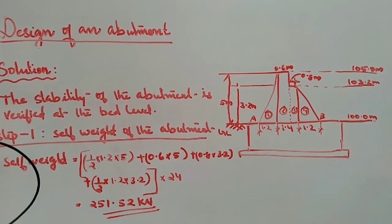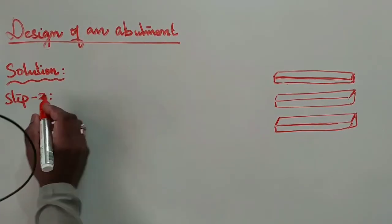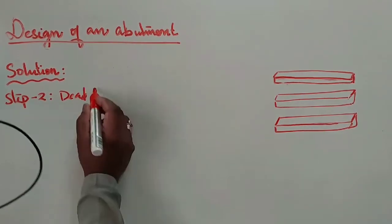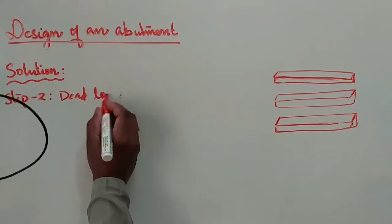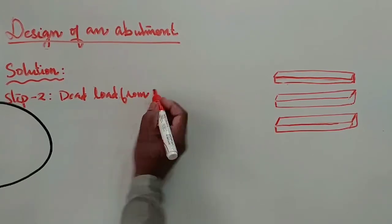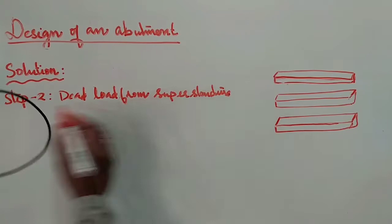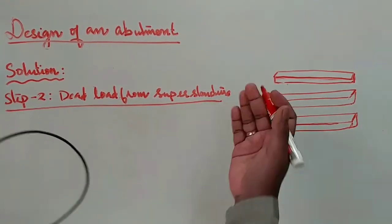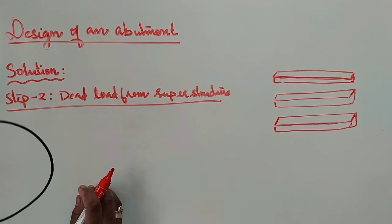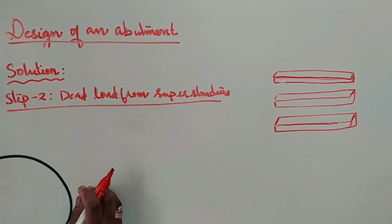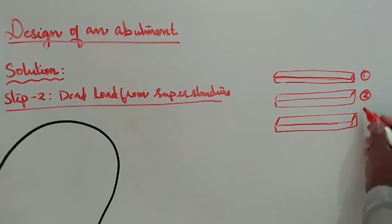The total self-weight is 251.52 kN. In this session we move on to step two: dead load from the superstructure. The dead load from the superstructure to the abutments includes the deck slab weight and girder weight. Here we have three longitudinal girders: one, two, and three.